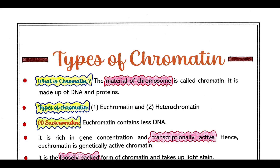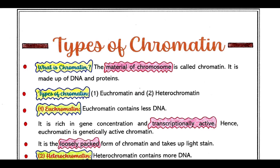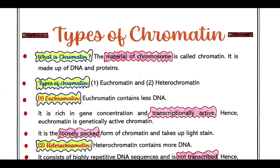So first of all, what is chromatin? The material of chromosome is called chromatin and it is made up of DNA and proteins.